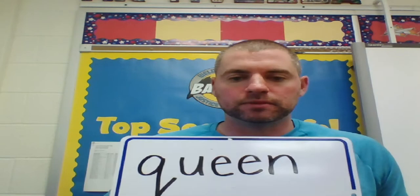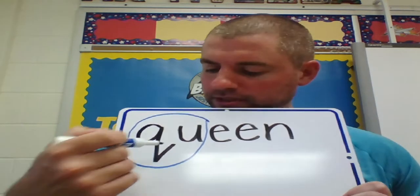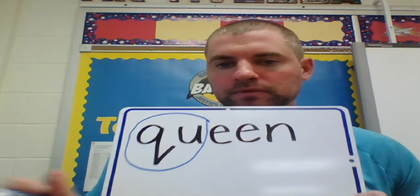So, this is the word queen. Now, I'm going to underline a part of this word. Actually, I'm going to circle it so you can see it better. I circled the Q, and then I circled the letter U with it.